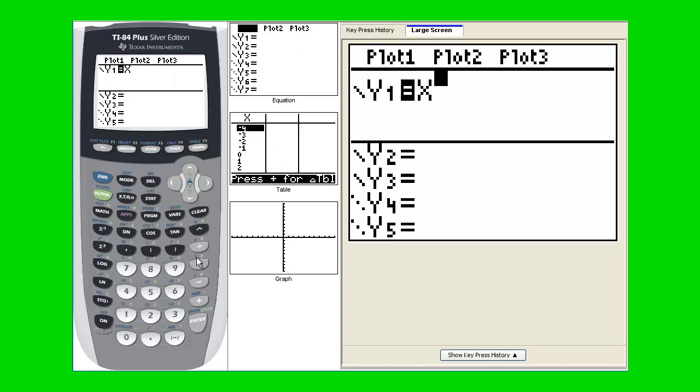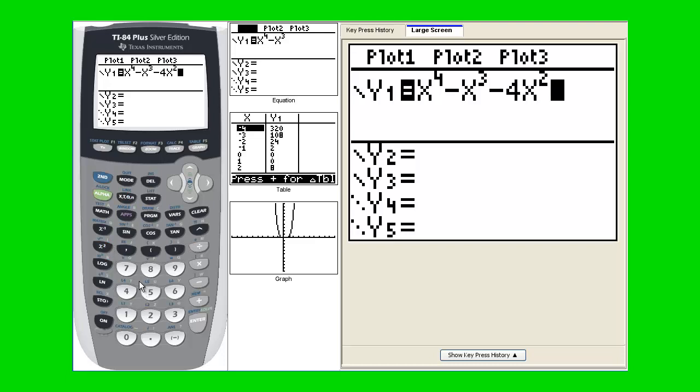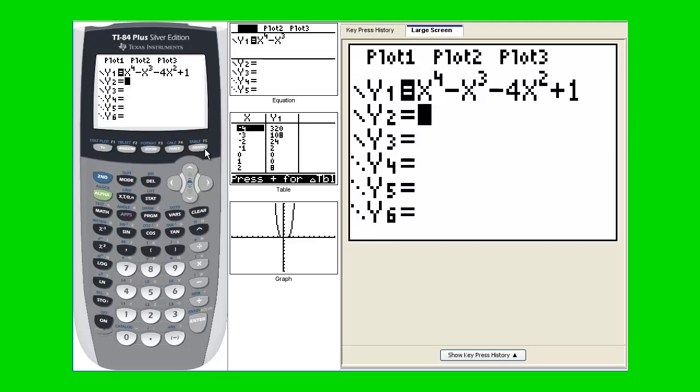So we're going to say we have an x to the fourth. So remember once you type in your four up here, cursor to the right, say minus x to the third. Cursor to the right again. And you get minus four x squared plus one. So here is going to be your function once you hit your graph key.